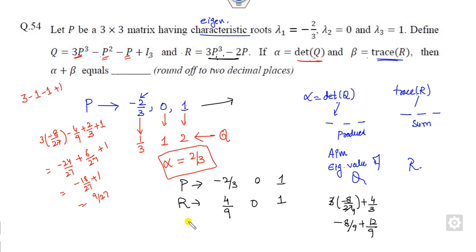Now find beta that is nothing but the trace, that is the sum of them, it will be 13/9. So what is the required answer? You need alpha plus beta. That is 2/3 plus 13/9, so 6 plus 13. If you multiply by 3, it is 6, so that is 19 divided by 9. You will get the required answer as 19/9.